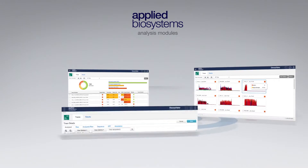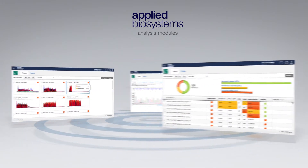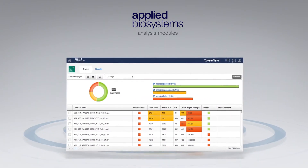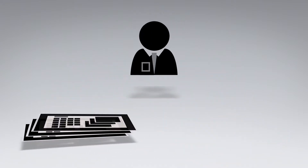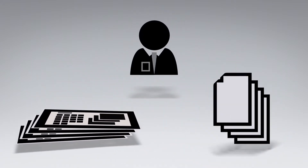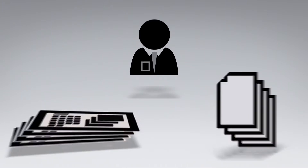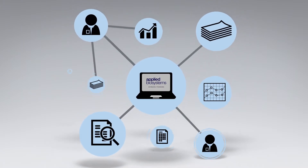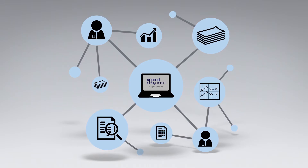Simply put, the Applied Biosystems Analysis Modules are new online software tools that provide integrated analysis of multiple data sets while offering functionality that yields a quicker time to valuable research results, providing you with all that you require to achieve a higher level of success in your research. When you utilize these modules, you have access to the latest secondary data analysis technology in today's research market.